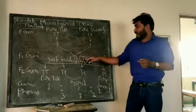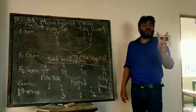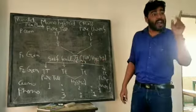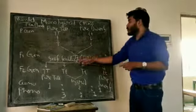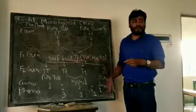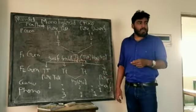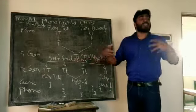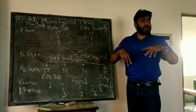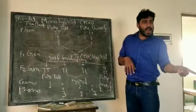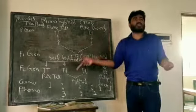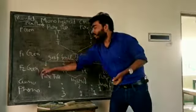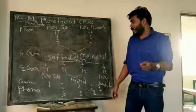What will happen next? These two hybrid tall F1 plants will undergo self-fertilization. This process is called self-fertilization, and the result is the F2 generation.